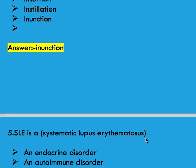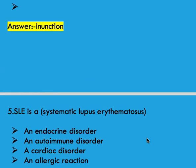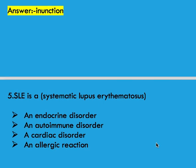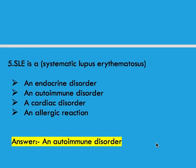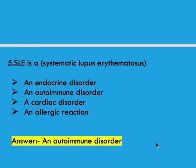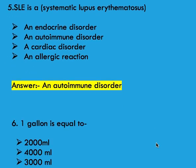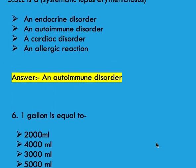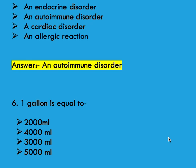Next question: SLE means Systemic Lupus Erythematosus. It is options: an endocrine disorder, an autoimmune disorder, a cardiac disorder, or an allergic reaction. Right answer is SLE is an autoimmune disorder.